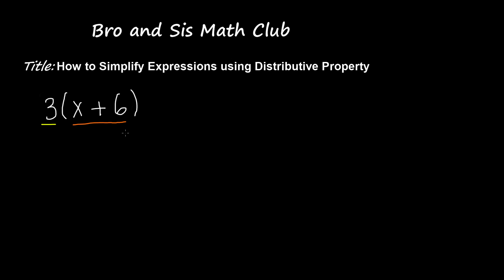So I'm going to use distributive property and distribute 3 to x first. 3 times x gives me 3x. Now I'm going to distribute 3 to positive 6. 3 times positive 6 gives me positive 18. So 3x plus 18 is our answer.